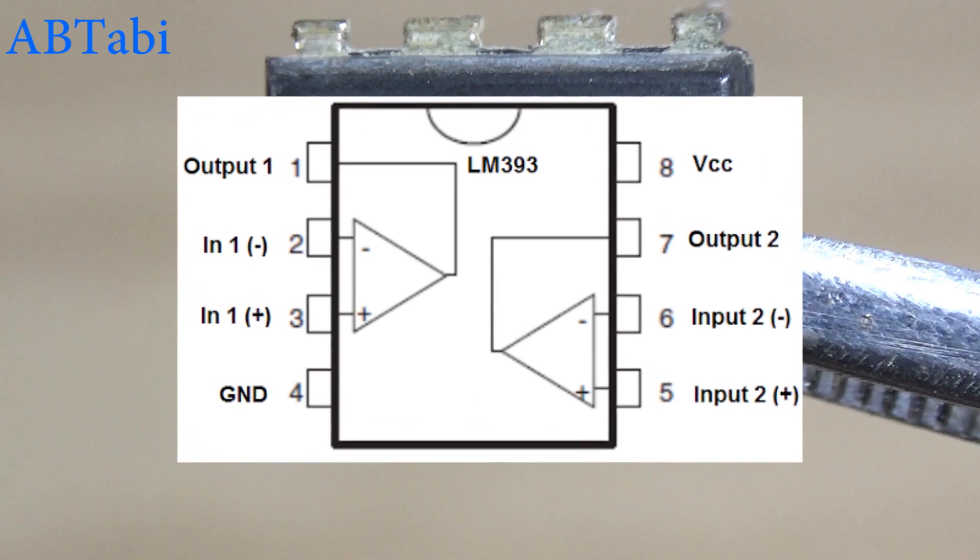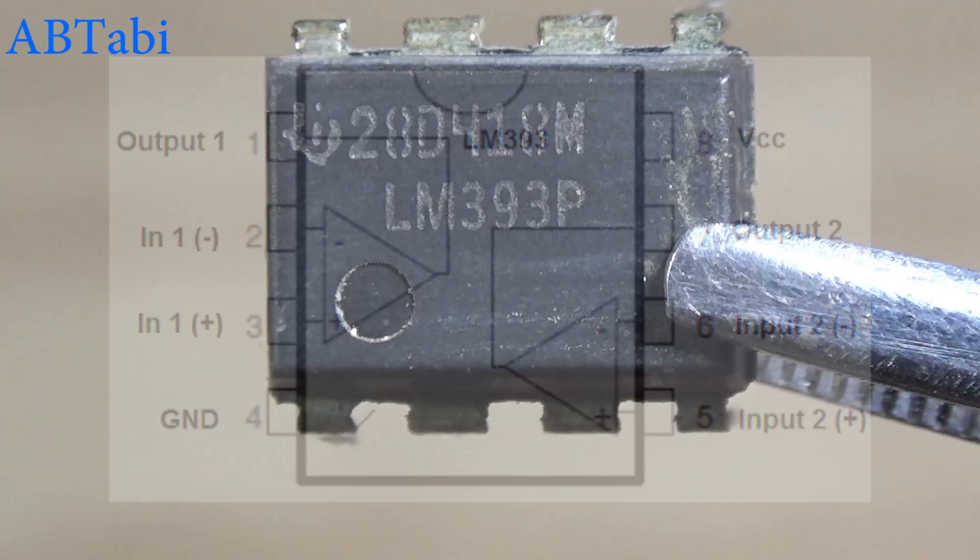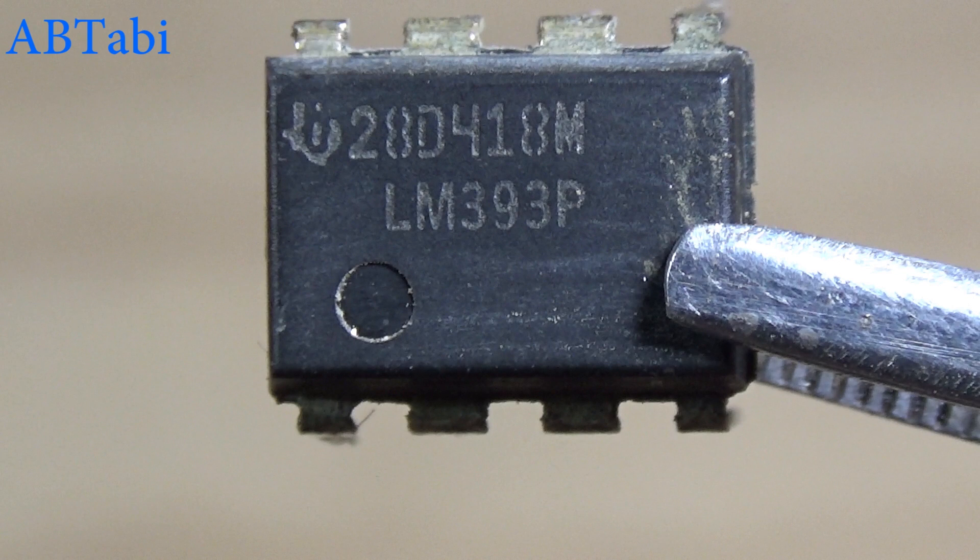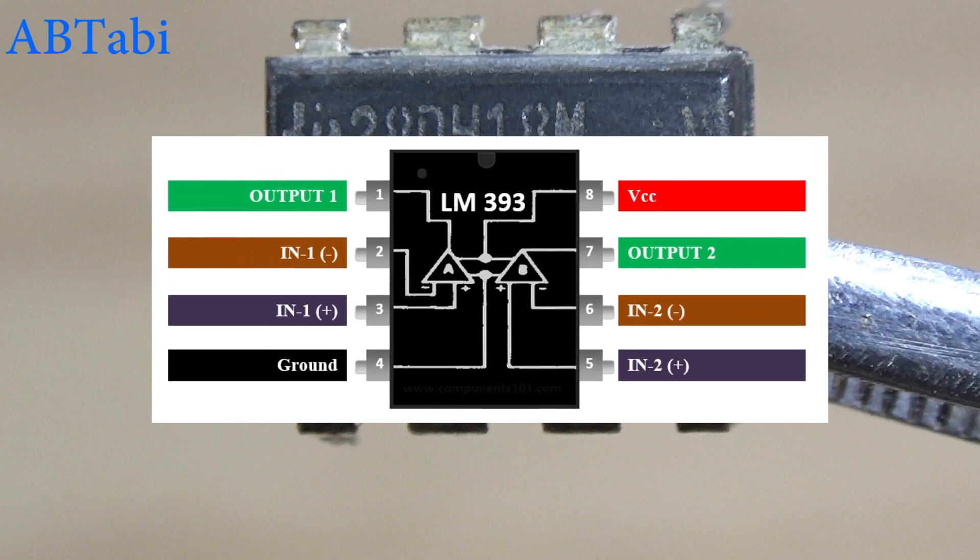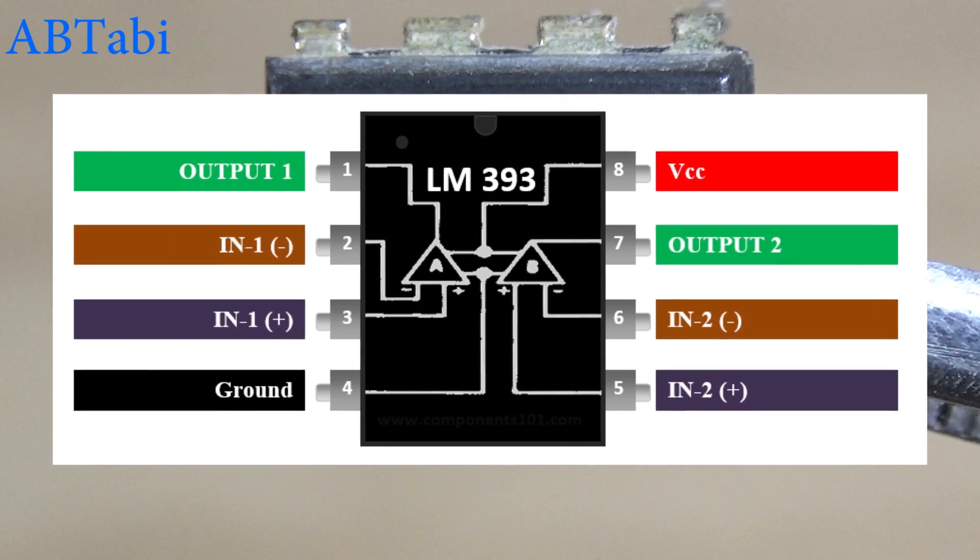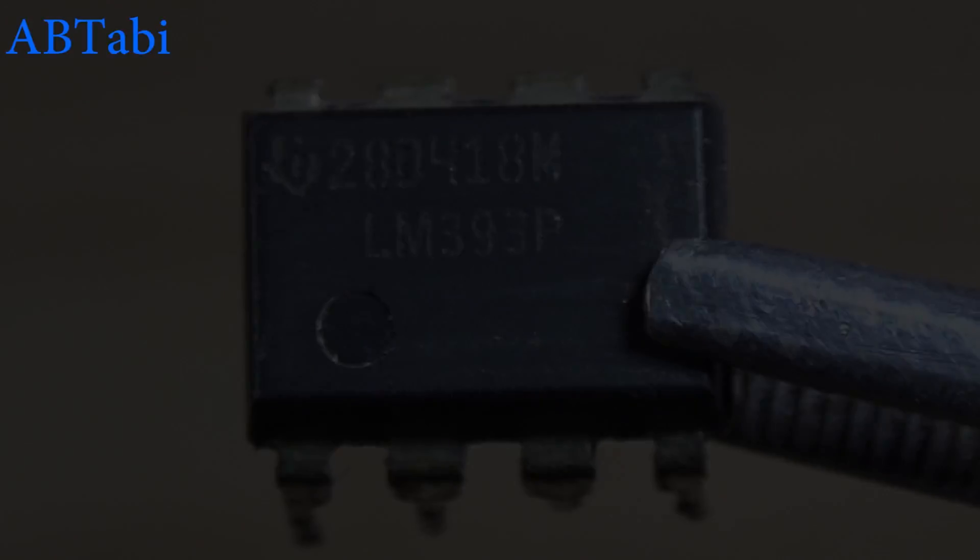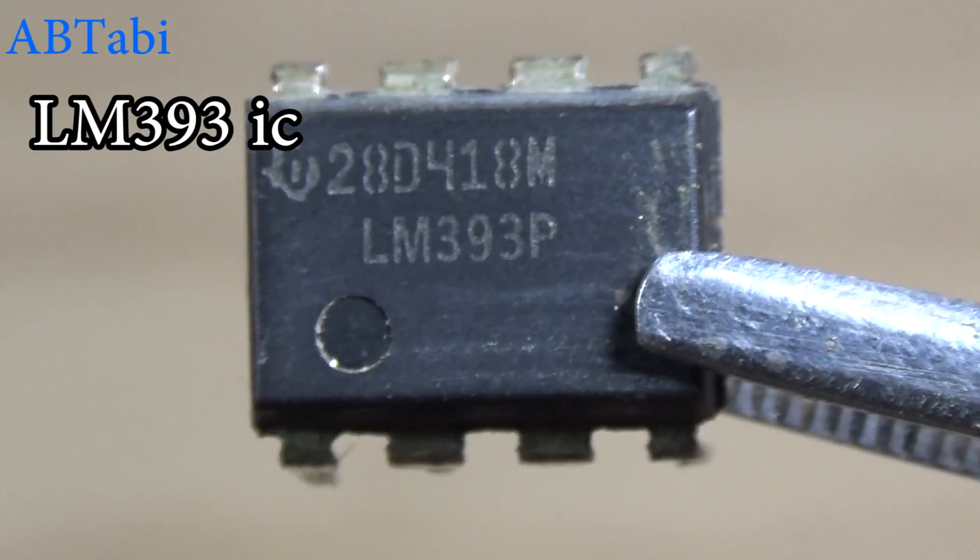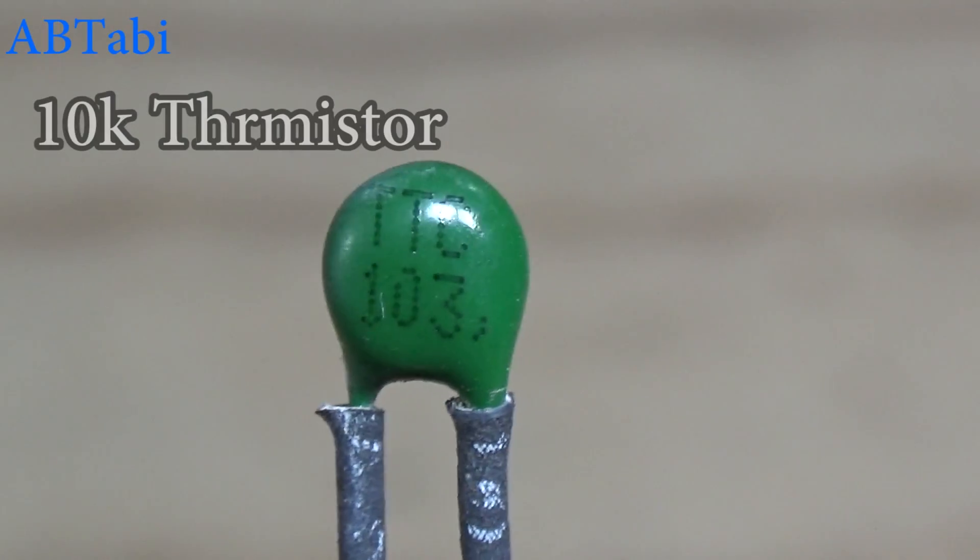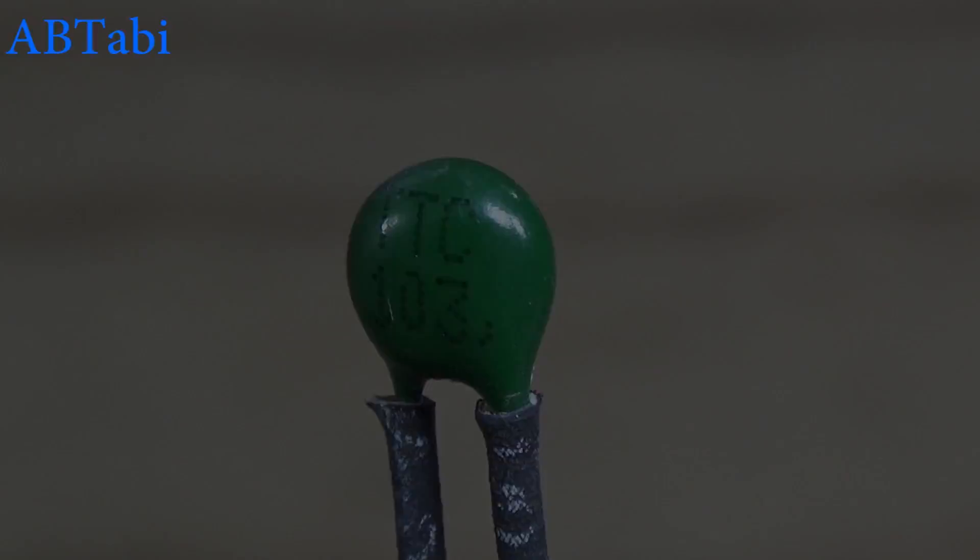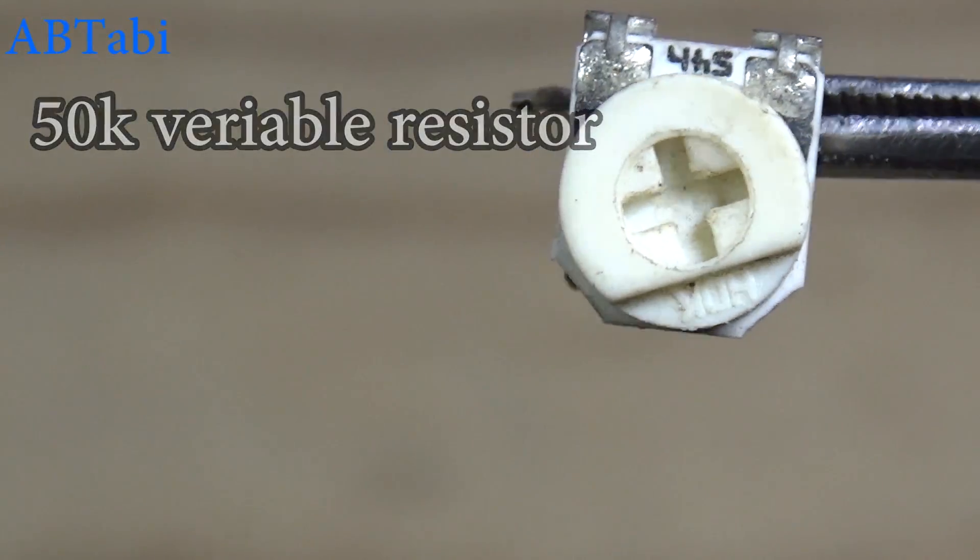We learn how to make a temperature sensor circuit using LM393 IC. As you know, the LM393 IC is a dual differential comparator IC. LM393 IC can operate 2 volts to 36 volts. We use components: LM393 IC, 10K thermistor, and 50K variable resistor or potentiometer.